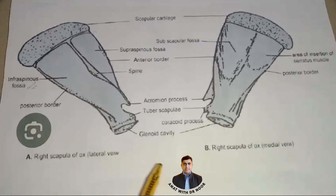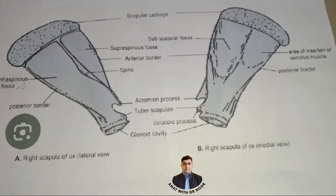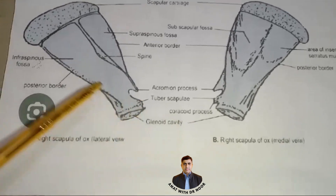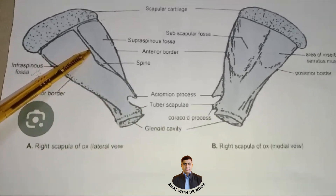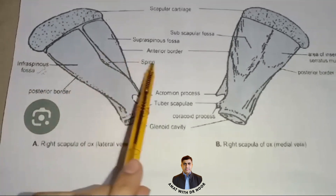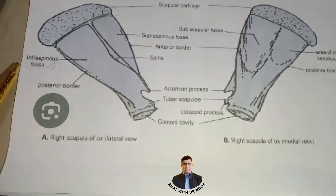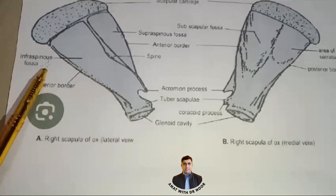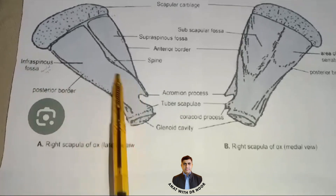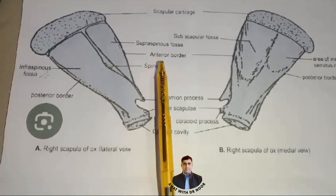This is a scapula of ox. First of all we discuss about the surfaces of scapula. It has two surfaces: one is lateral surface and other is medial surface. On the lateral surface, there is a long prominent ridge running longitudinally which is the scapula spine, which scapula ko do parts mein divide karta hai. One is infraspinous fossa, jahan pe infraspinatus muscles ki attachment hoti hai. Another is supraspinous fossa, jahan pe supraspinatus muscles ki attachment hoti hai.